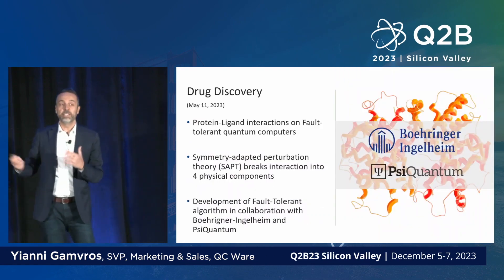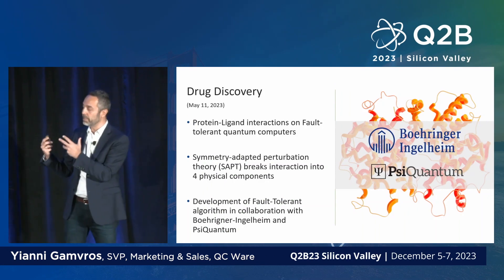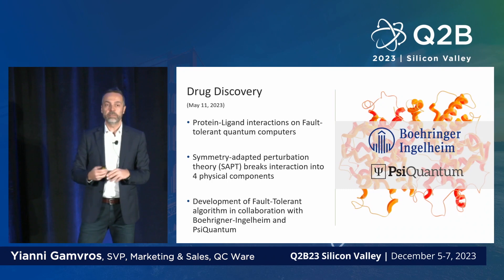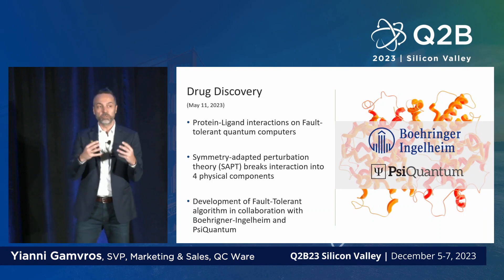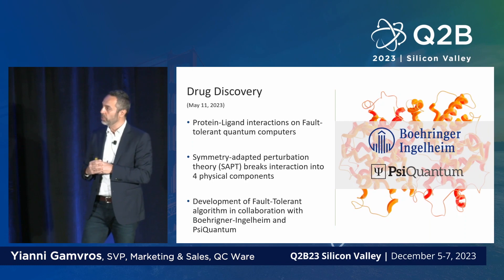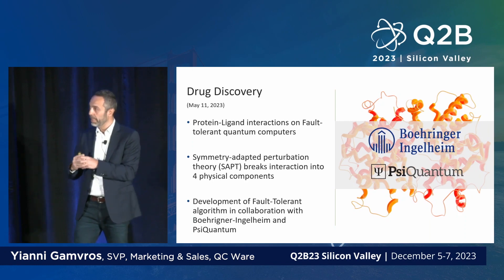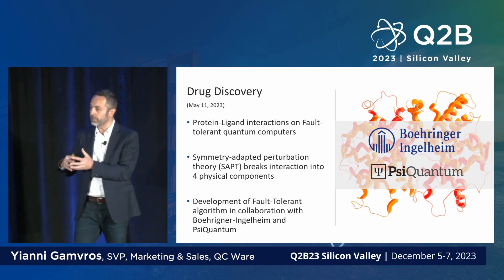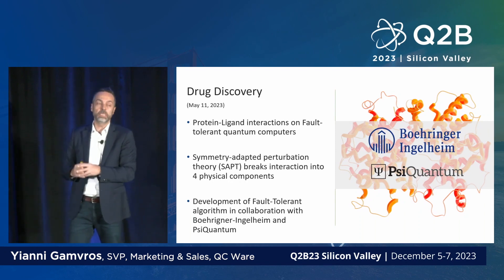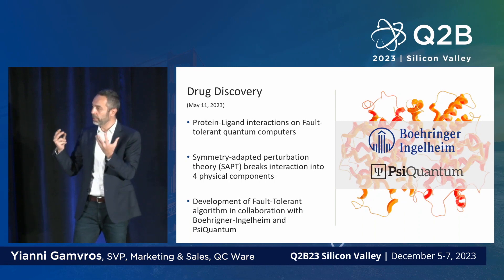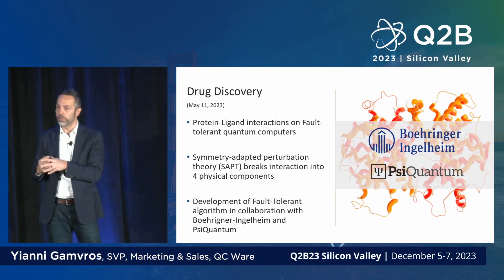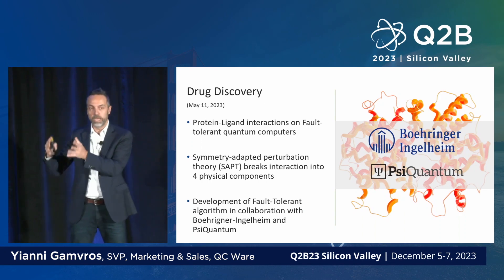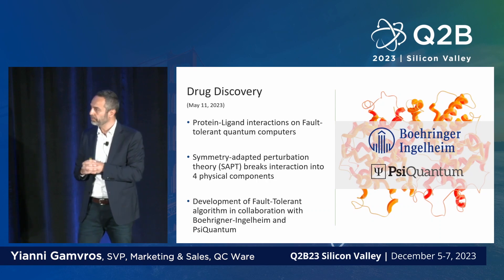This next example addresses the holy grail in pharmaceuticals: how do you design better drugs and detect the binding forces between potential drugs and the proteins they target? We looked at this in the context of fault-tolerant quantum computers, working together with Boehringer Ingelheim and PsiQuantum. We took a technique called symmetry-adapted perturbation theory and implemented it on a quantum computer, looking at how you'd run it on a fault-tolerant architecture. Results are published and available on our website.